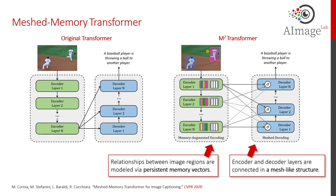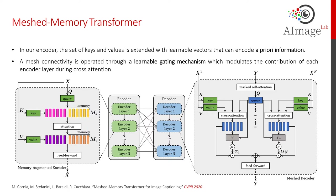In our encoder, the set of keys and values is extended with learnable vectors that can encode a priori information. Then, a mesh connectivity is operated through a learnable gating mechanism which modulates the contribution of each encoder layer during cross-attention.